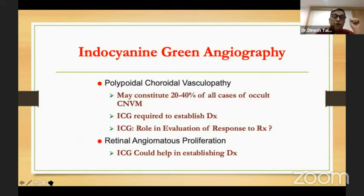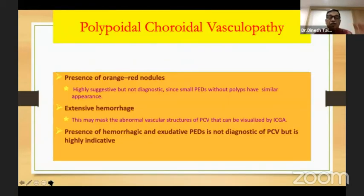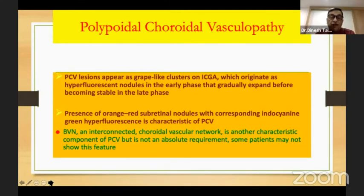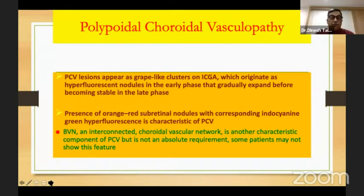The second important place is PCV, which today constitutes 20 to 40% of cases of occult CNVM. Clinically, you can make a diagnosis based on the orange-reddish nodules in the fundus and extensive hemorrhage or exudation — but these only give you an idea. On ICG, you can actually see the clusters or single polyps. They may be pulsatile, which you can see on video ICG. In addition, you may even be able to see the branching vascular network, which is another characteristic of PCV.